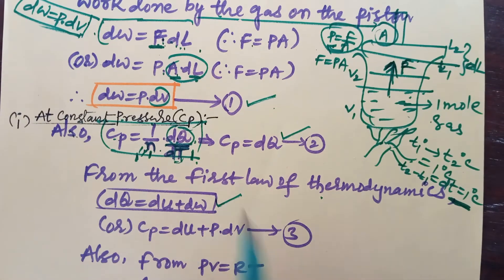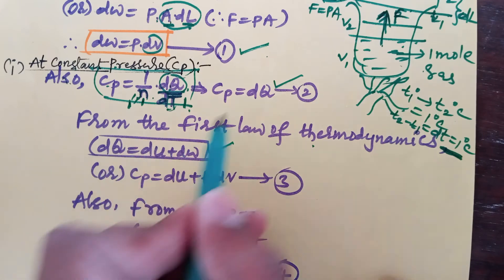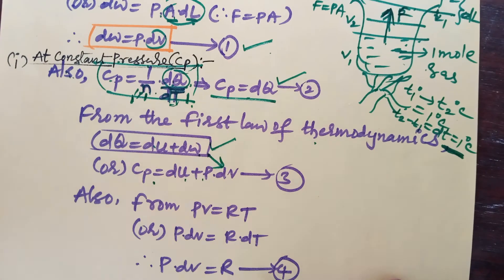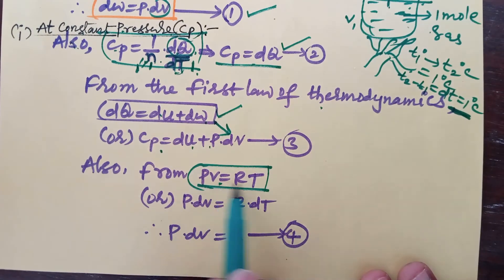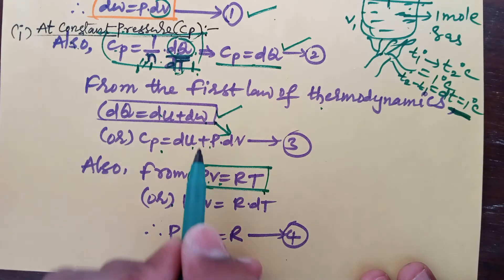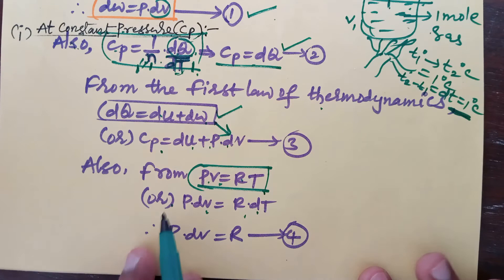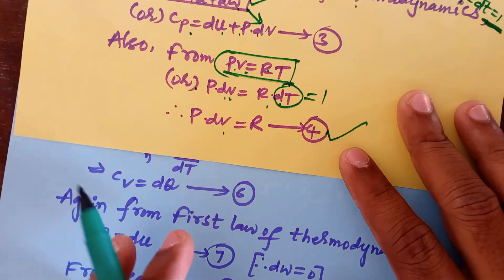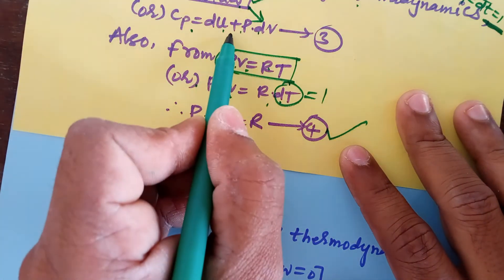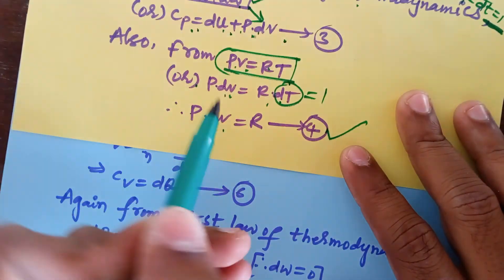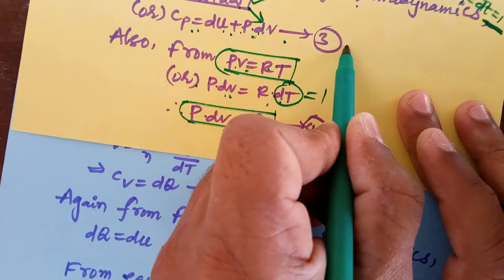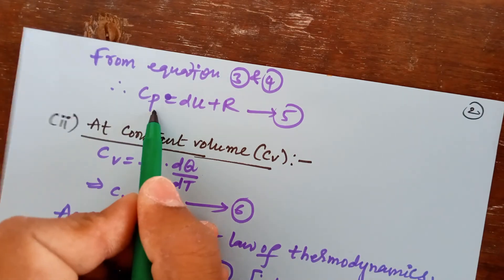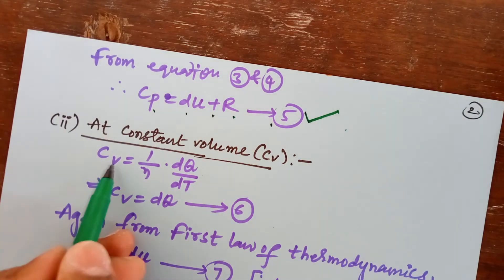From the first law of thermodynamics, dQ equals dU plus dW. Since dQ equals Cp (from equation 2) and dW equals P times dV (from equation 1), we get Cp equals dU plus P·dV. Also, from the ideal gas equation PV equals RT, differentiating gives P·dV equals R·dT, and since dT equals 1, P·dV equals R. Therefore, combining these equations, Cp equals dU plus R. This is equation 5.